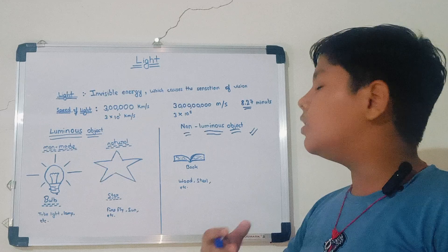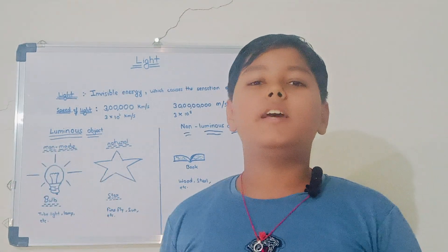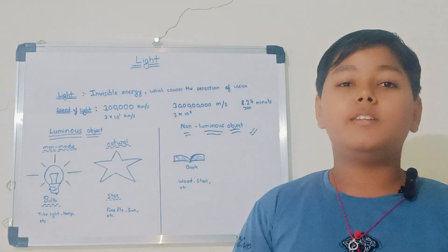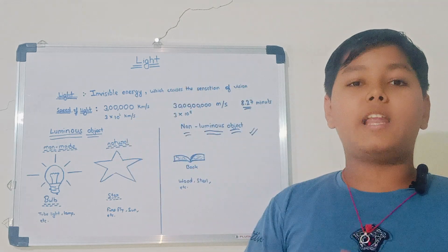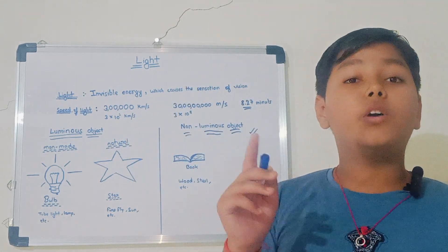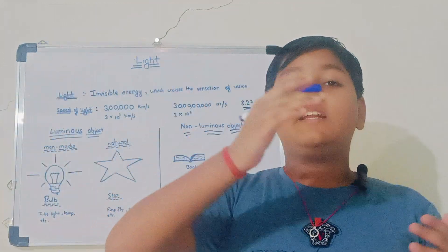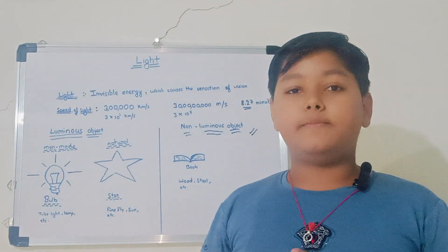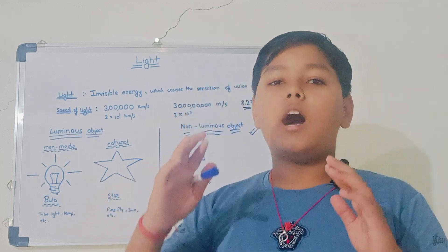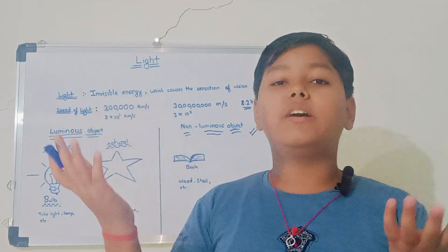And another example of non-luminous things are moon. Everybody thinks that it produces light, but no, it do not produce light. It acts like a mirror and reflects the rays of sun falling on it. So therefore, the moon is half because the shadow of earth grow it.